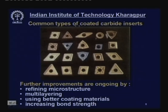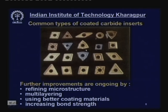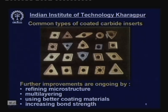Coated carbide inserts are available in forms such as square, rectangle, rhombus, and hollow or solid, with patterns for chip breaking. The coating does not change the pattern — patterns are given in the uncoated tool and the coating is uniformly distributed on top irrespective of the pattern. So benefits like built-up edge prevention, chip breaking, and controlled contact cutting are all retained.